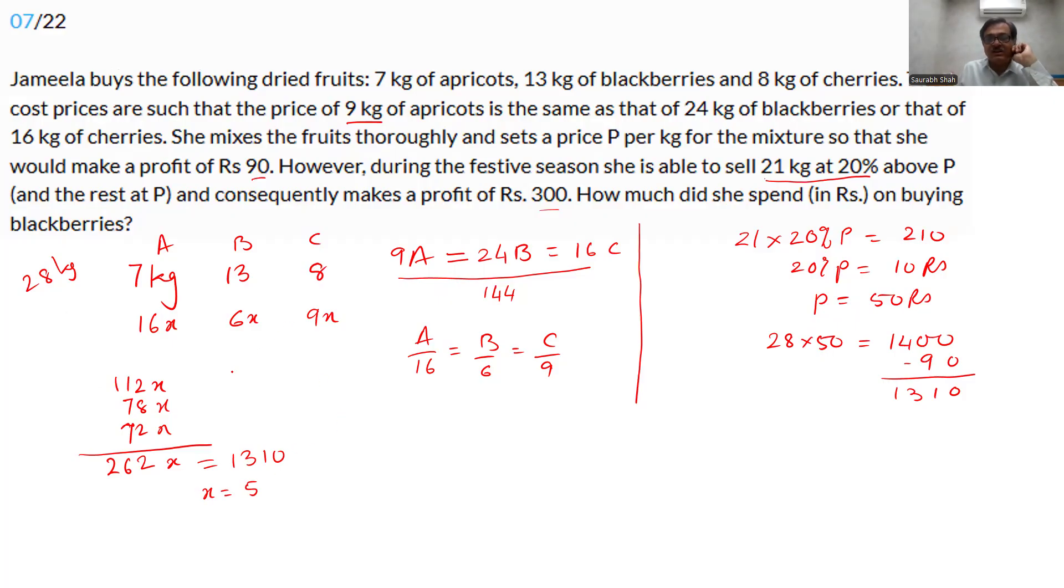With x is equal to 5, we now need the total amount spent on blueberries, which is 78. 78 into 5 is our answer. 78 being even, simply divide by 2 and add a 0 at the end. 78 divided by 2 is 39, add the 0. 390 rupees is the amount spent on blueberries.